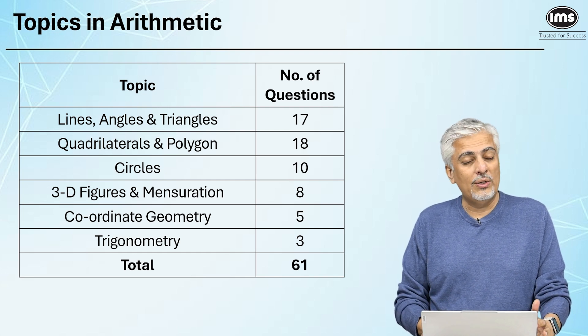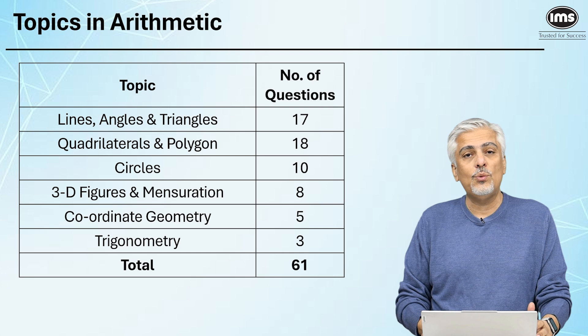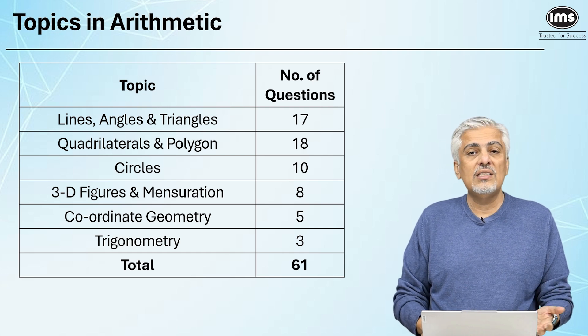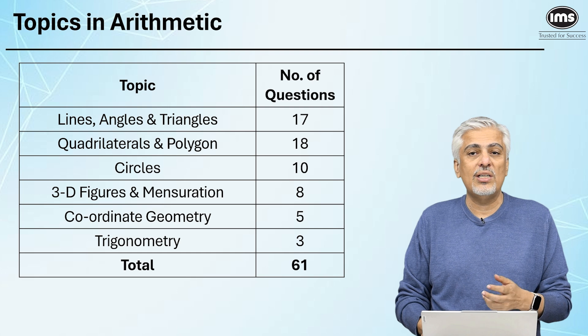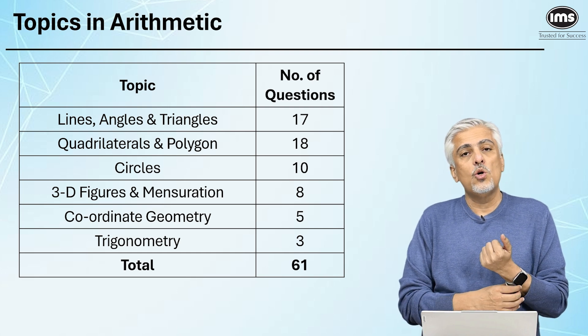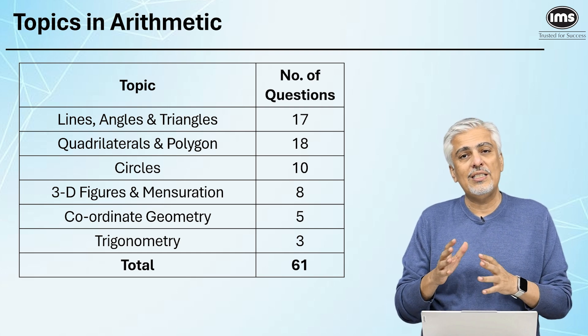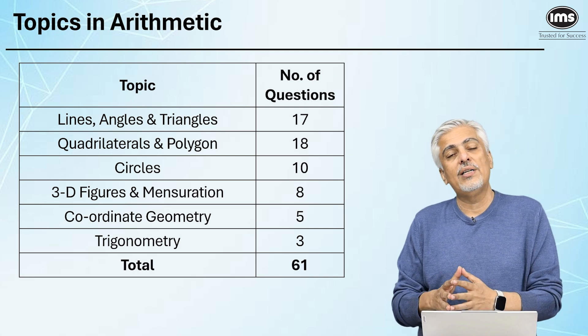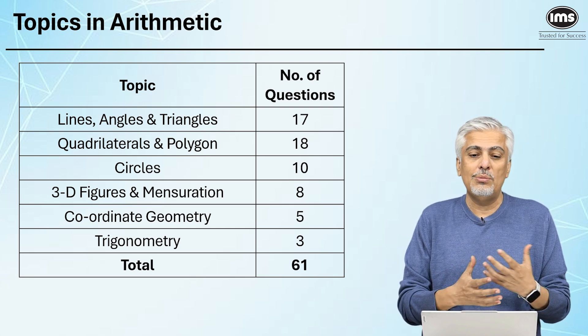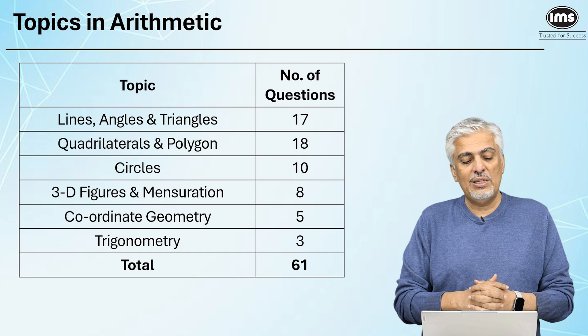Quadrilaterals and polygon, one very important area, has around 18 questions in the last 5 years. Circles has around 10 questions. Then there is 3D figures and mensuration, which is around 8 questions. Coordinate geometry can always go in geometry or it can go in algebra. Well, I put it in geometry normally, so I'm just keeping it here. Approximately 5 questions.